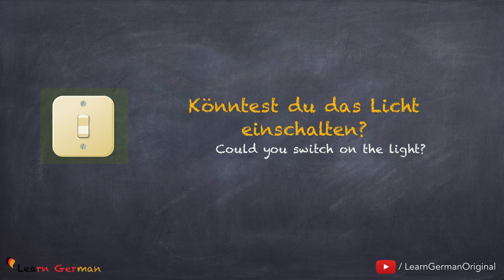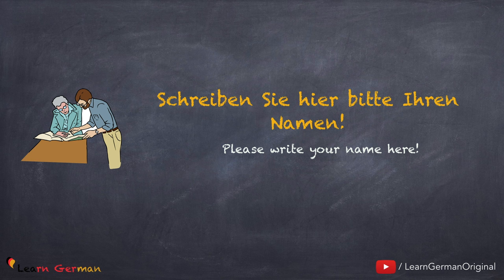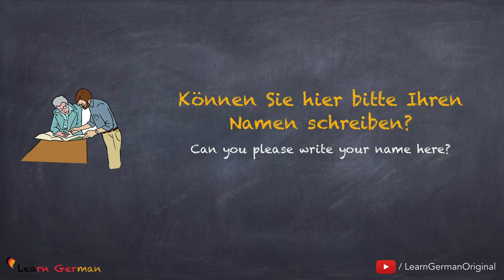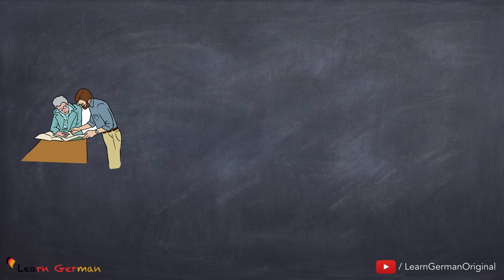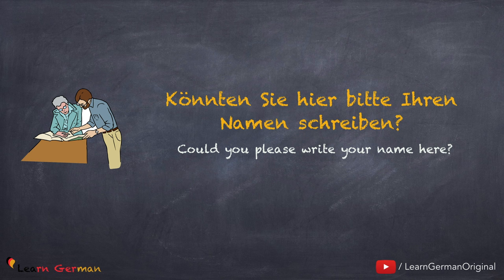So, nächstes Mal, wenn du eine Frage formulierst, kannst du gern Konjunktiv 2 benutzen. Besonders in Situationen, wo man mit fremden Leuten spricht, sollte man Konjunktiv 2 benutzen. Hier ist ein Beispiel mit einem formellen Satz: Schreiben Sie hier bitte Ihren Namen. Etwas freundlicher kann man fragen: Können Sie hier bitte Ihren Namen schreiben? Höflicher ist, wenn man fragt: Würden Sie hier bitte Ihren Namen schreiben? Und sehr höflich ist, wenn man die Frage mit Könnten formuliert: Könnten Sie hier bitte Ihren Namen schreiben?